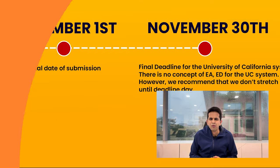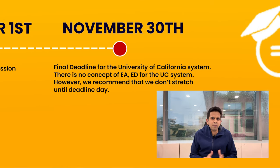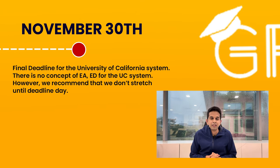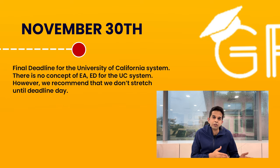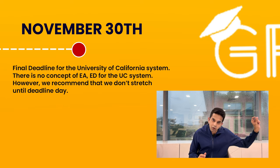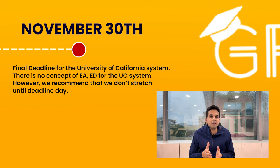There's a final date to keep in mind: November 30th, which is the University of California application deadline. Since you finished your UC essays much earlier, you can apply well before the November 30th deadline — there's no point stretching so long. The University of California has no concept of early action, early decision, or regular decision — it's a standard deadline on the 30th, and you can choose to apply anytime before that.